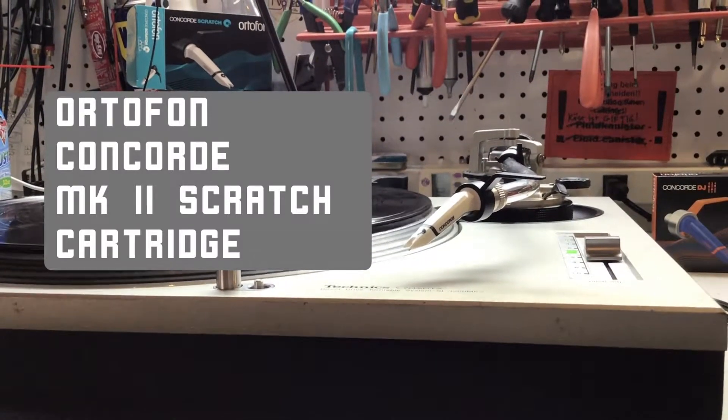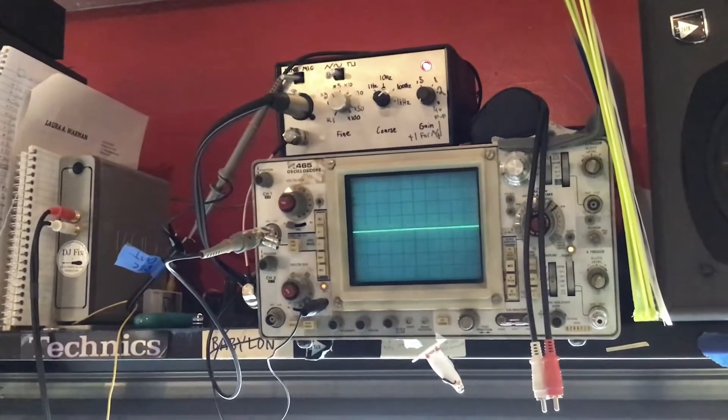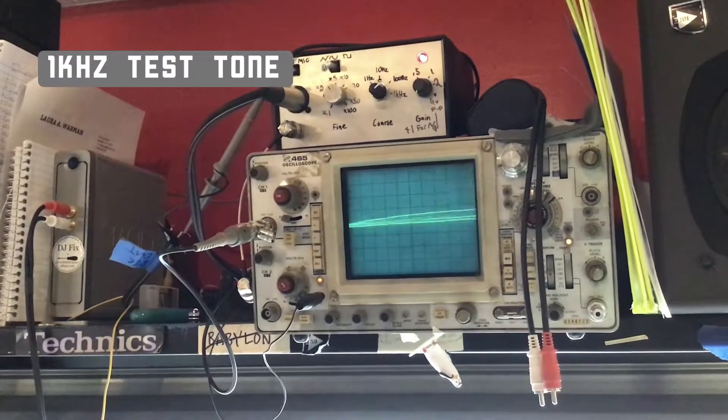Testing the Ortofon Concorde Mark II scratch cartridge. Here we go with the test tone. Right channel, 1,000 cycles for reference level.